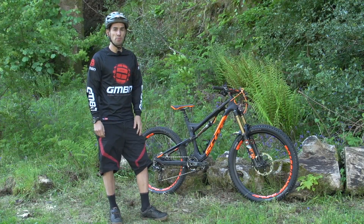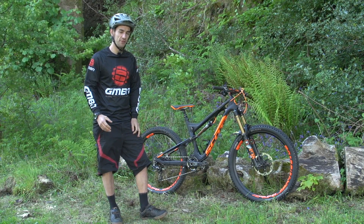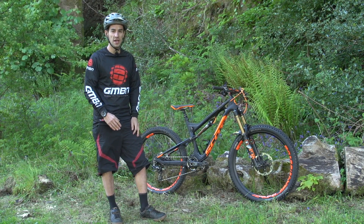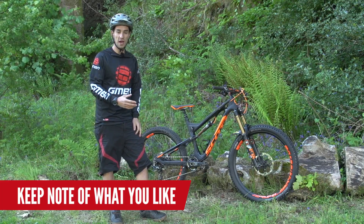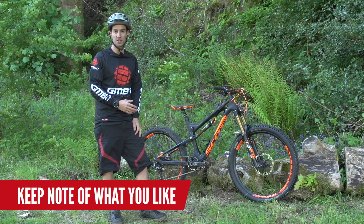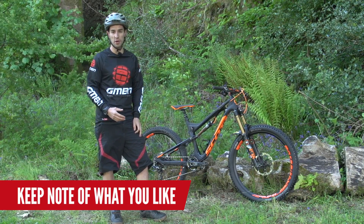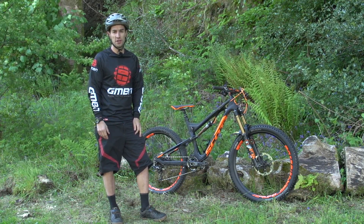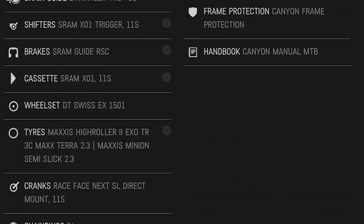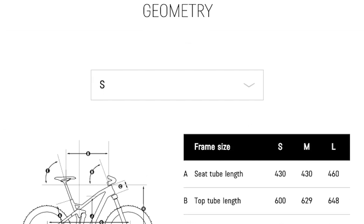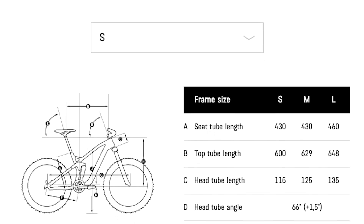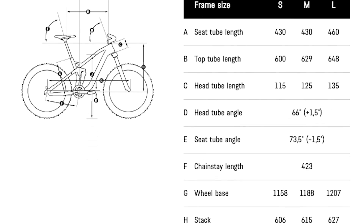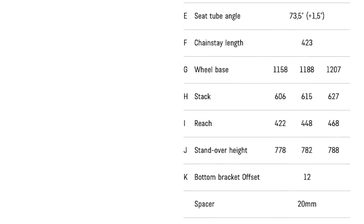As bottom bracket height and head angle make such a difference to how that bike rides, it's good to keep note of what you have on your bike and what you want from a bike. When you're planning your next bike purchase, you can go onto the manufacturer's website and actually get a good feel about how that bike is going to ride just from looking at those figures.